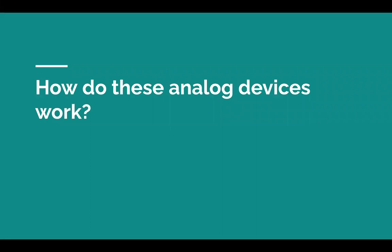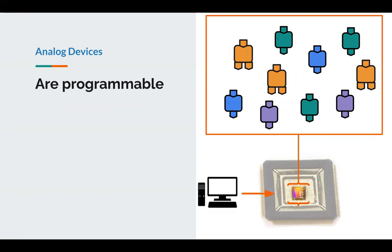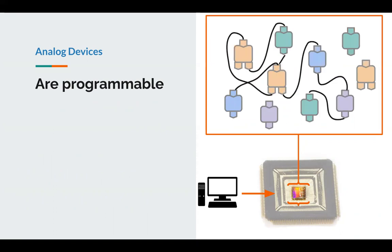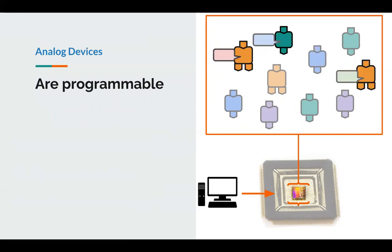The way these analog devices execute dynamical systems is a bit non-standard. Within these devices there are collections of computational blocks. These devices are programmable — you can write bits to them to program them on the fly. There are two ways to program them. First, you can enable interconnects in the device to form circuits, using this technique to implement your computations.